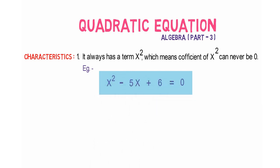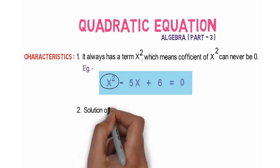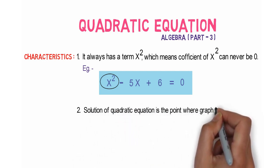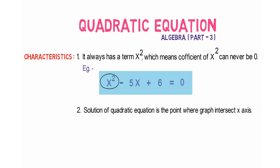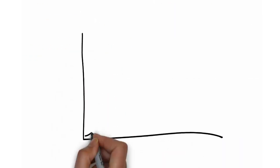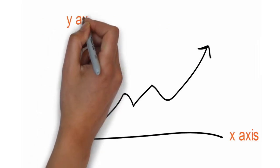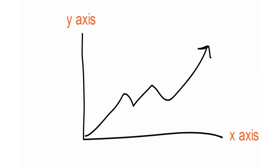The next characteristic is the solution of a quadratic equation is always the point where the graph intersects the x-axis. In any graph, we have horizontal and vertical lines. The horizontal line is called the x-axis and the vertical line is called the y-axis. The intersection point of the x-axis and y-axis is called point (0,0) or the origin.